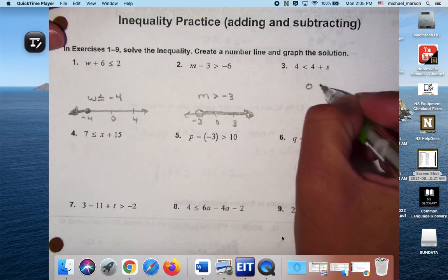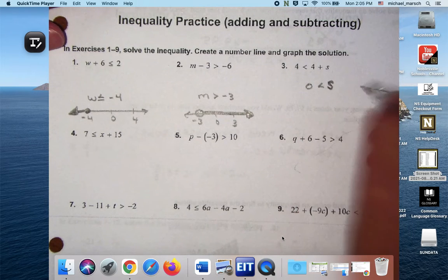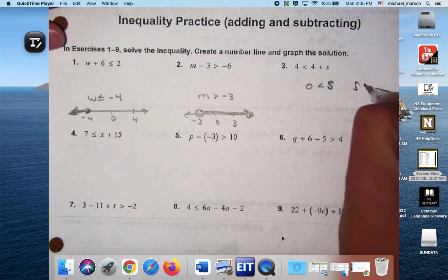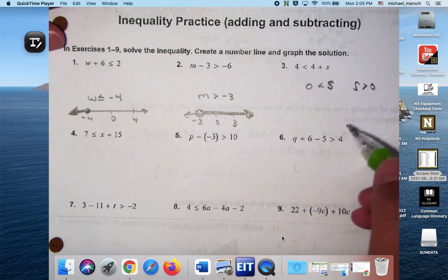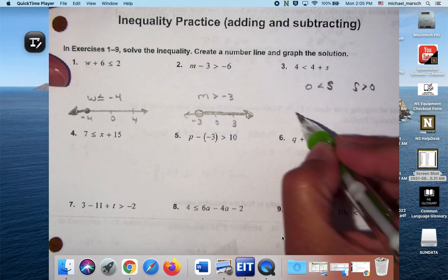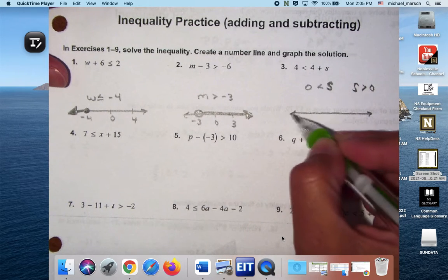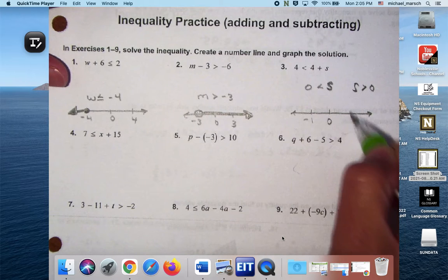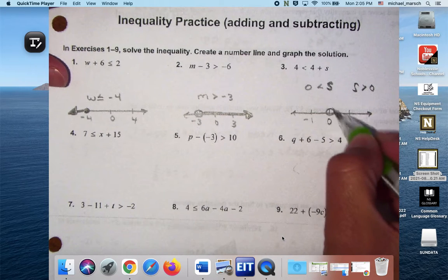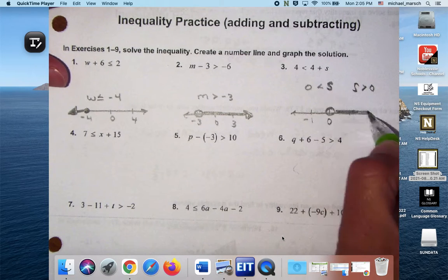So for number 4, I would get 0 is less than S, which I would rewrite as S is greater than 0. I really don't like when they use S's. So then I would just use like negative 1, 0, and 1. Open circle, going to the right on 0.